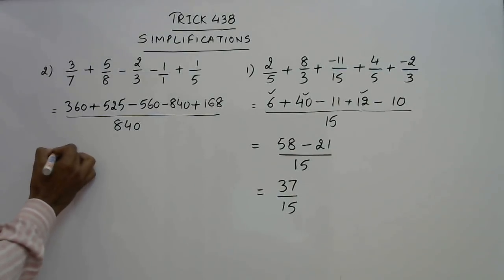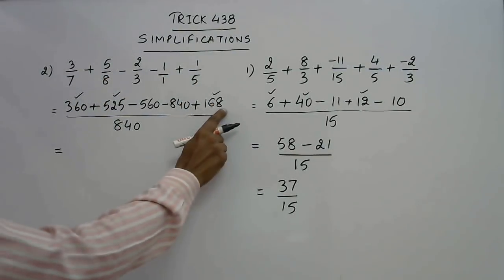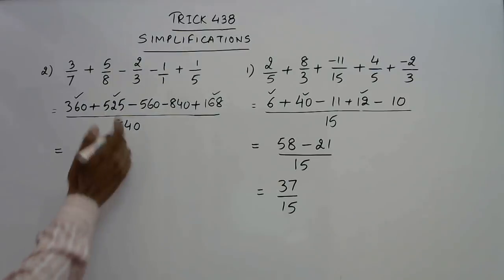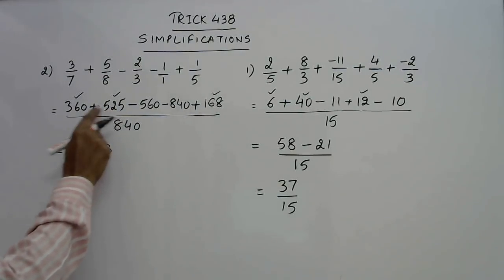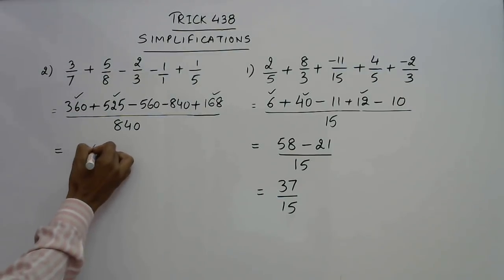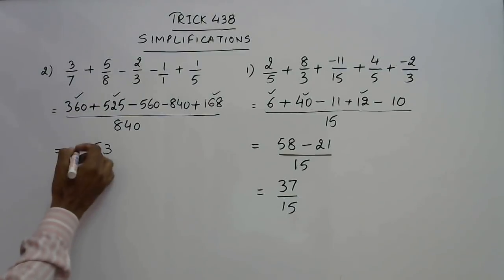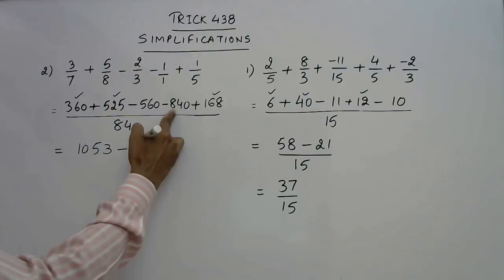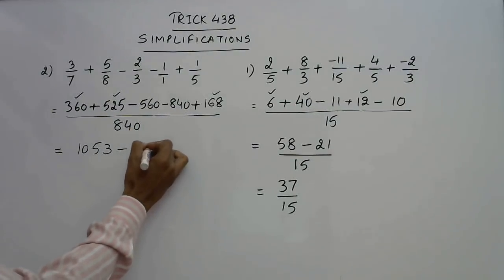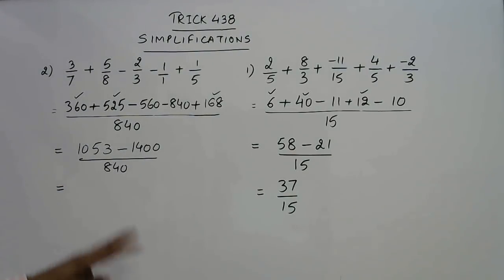Now in the next step I need to add all the numbers which are positive. So 8, 5, 13, 1 carry. So 7, 8, 9, 9 and 6, 15, 5 again 1 carry. So 2, 840 and 810. So 1053 minus this is 13, 14, 1400 upon 840. So here you have your answer. Just subtract the numerator and you get your final answer.